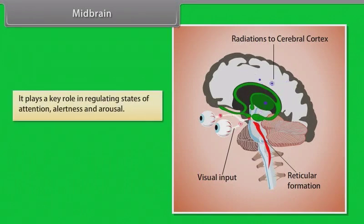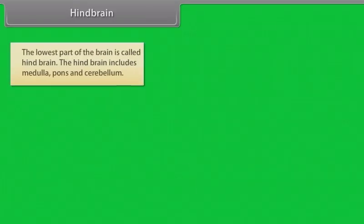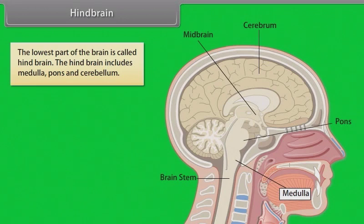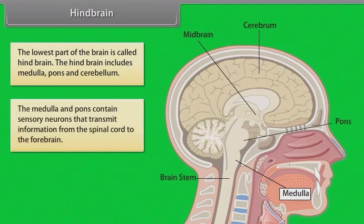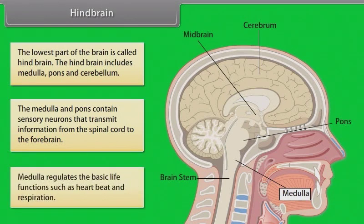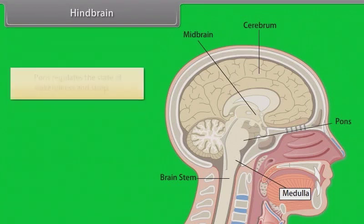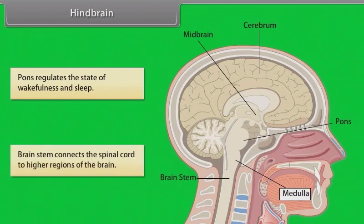The reticular formation is a web-like network of neurons that rises from the hindbrain and passes through the midbrain to the thalamus in the forebrain, playing a key role in regulating states of attention, alertness, and arousal. The hindbrain includes the medulla, pons, and cerebellum. The medulla regulates basic life functions such as heartbeat and respiration, while the pons regulates the state of wakefulness and sleep. The brain stem connects the spinal cord to higher regions of the brain.